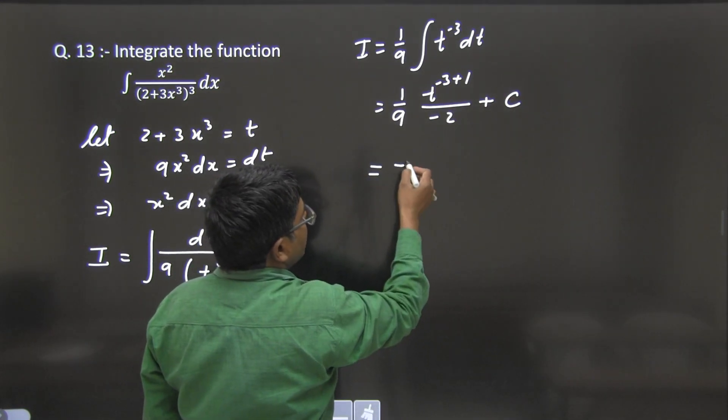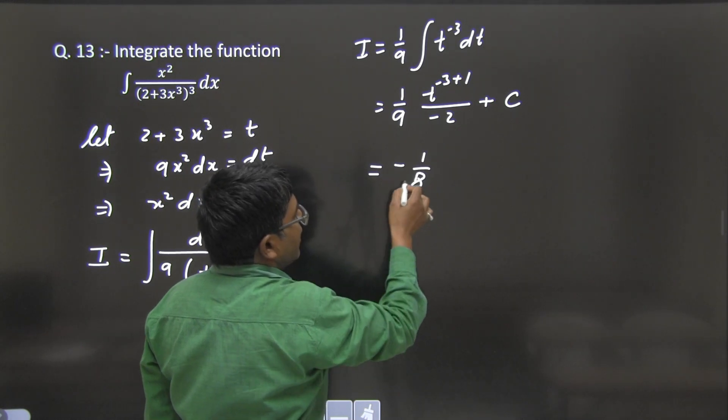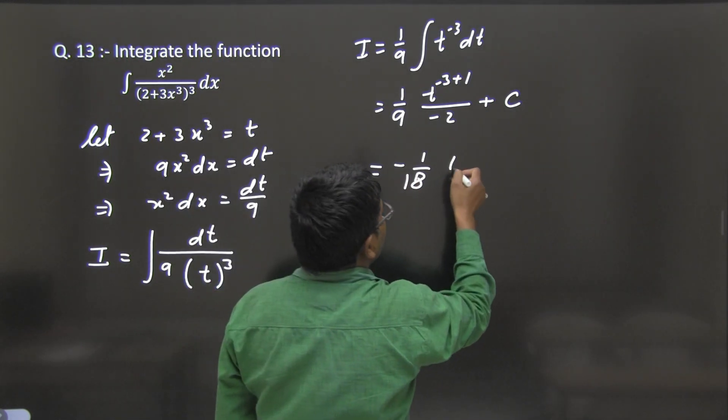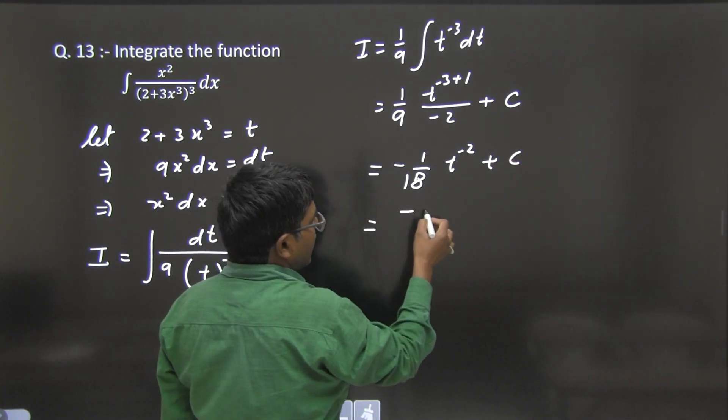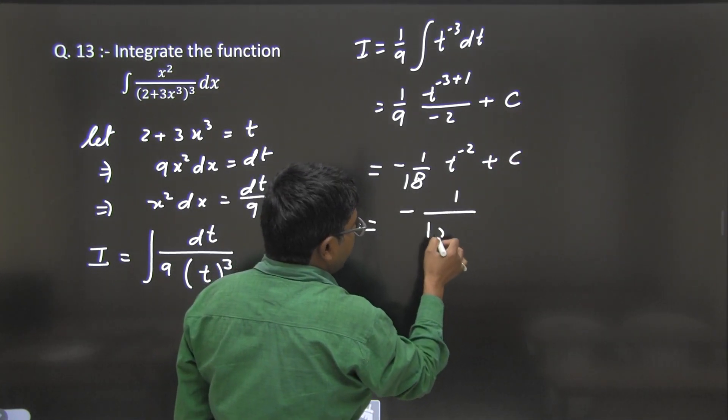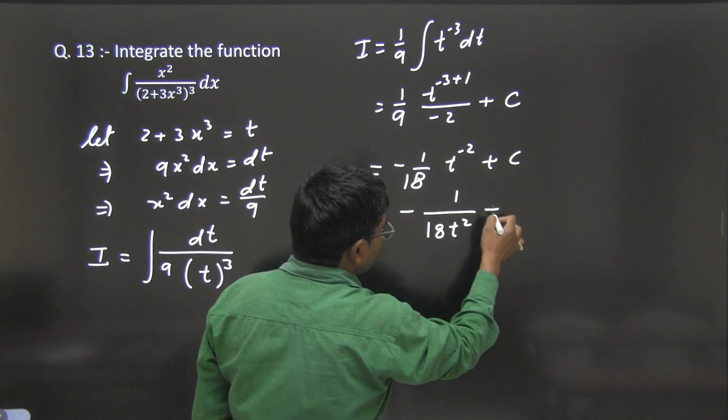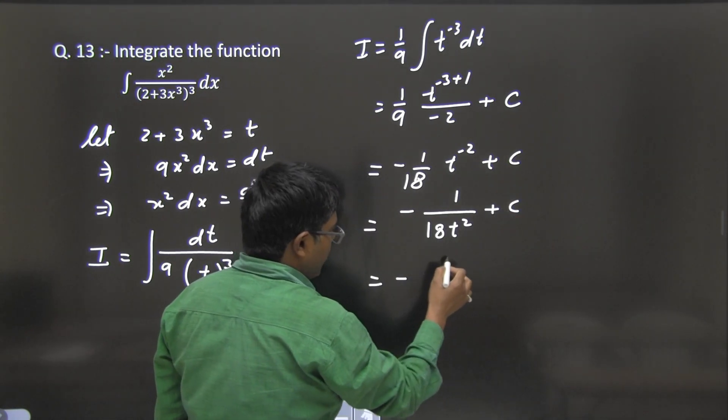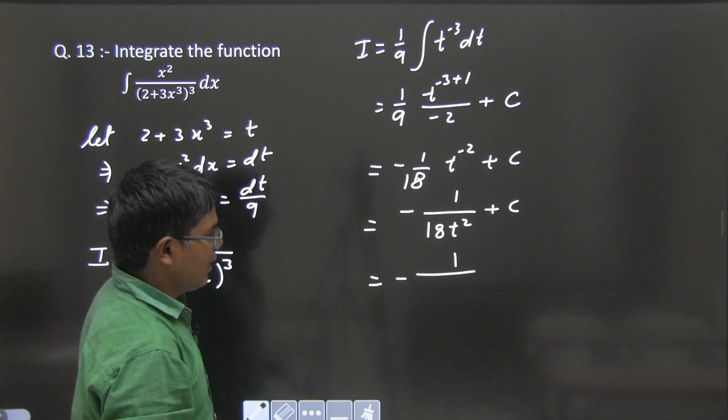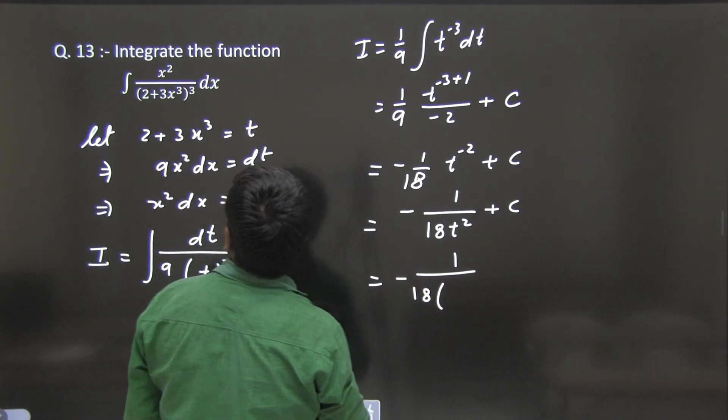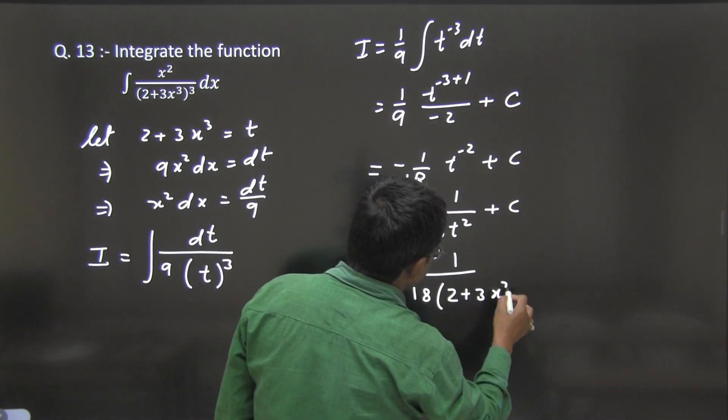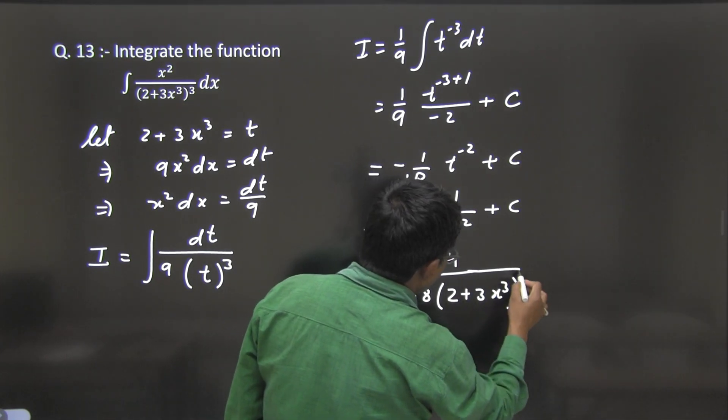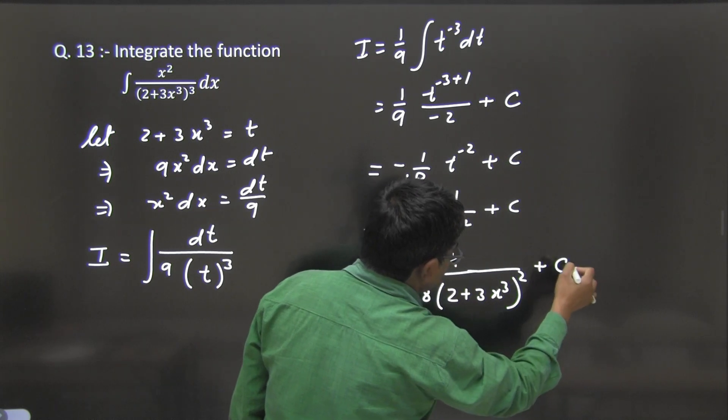Finally we will get -1/18 × t^(-2) + c, that means -1/(18t²) + c. Now replace the value of t. So,